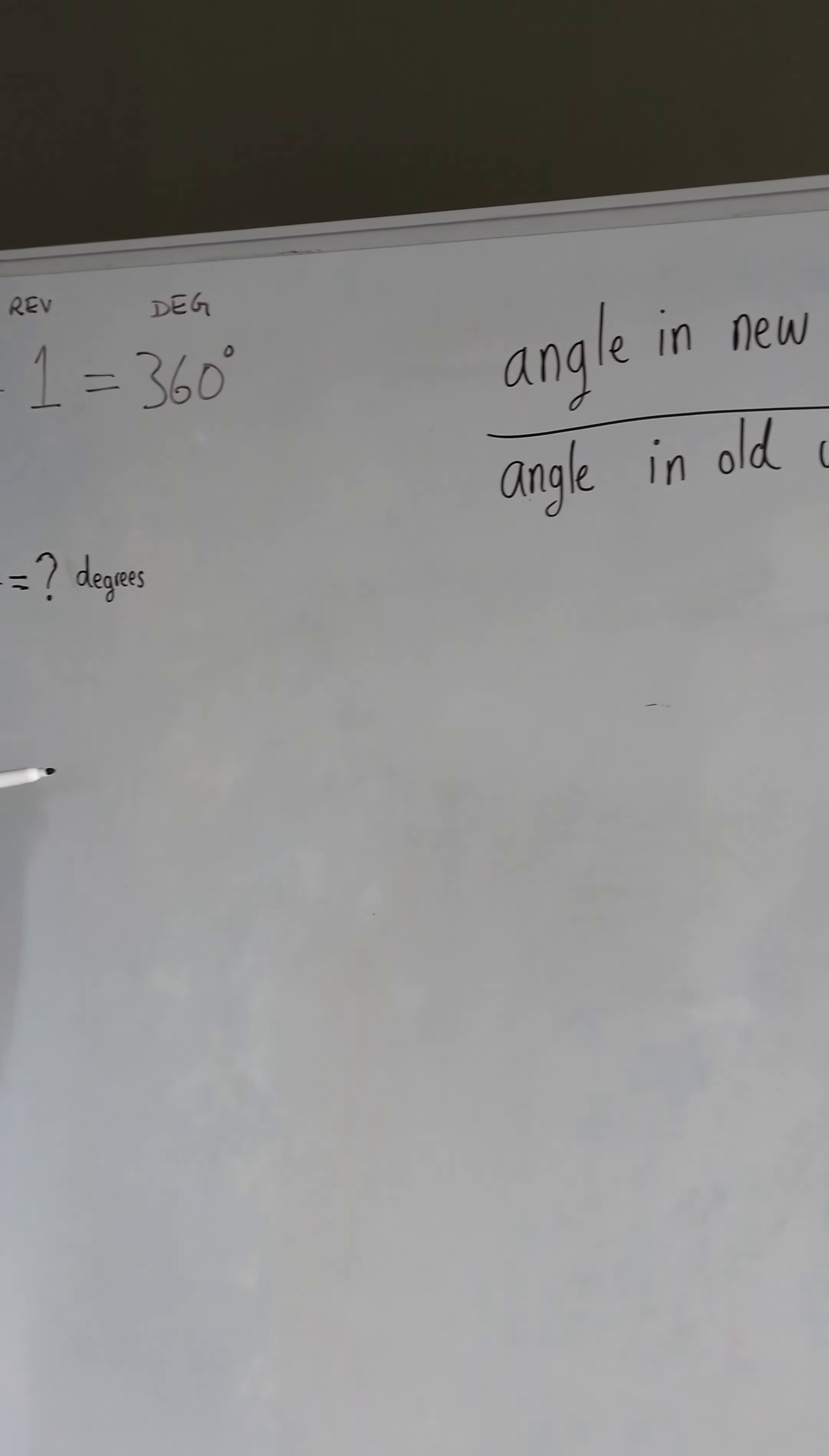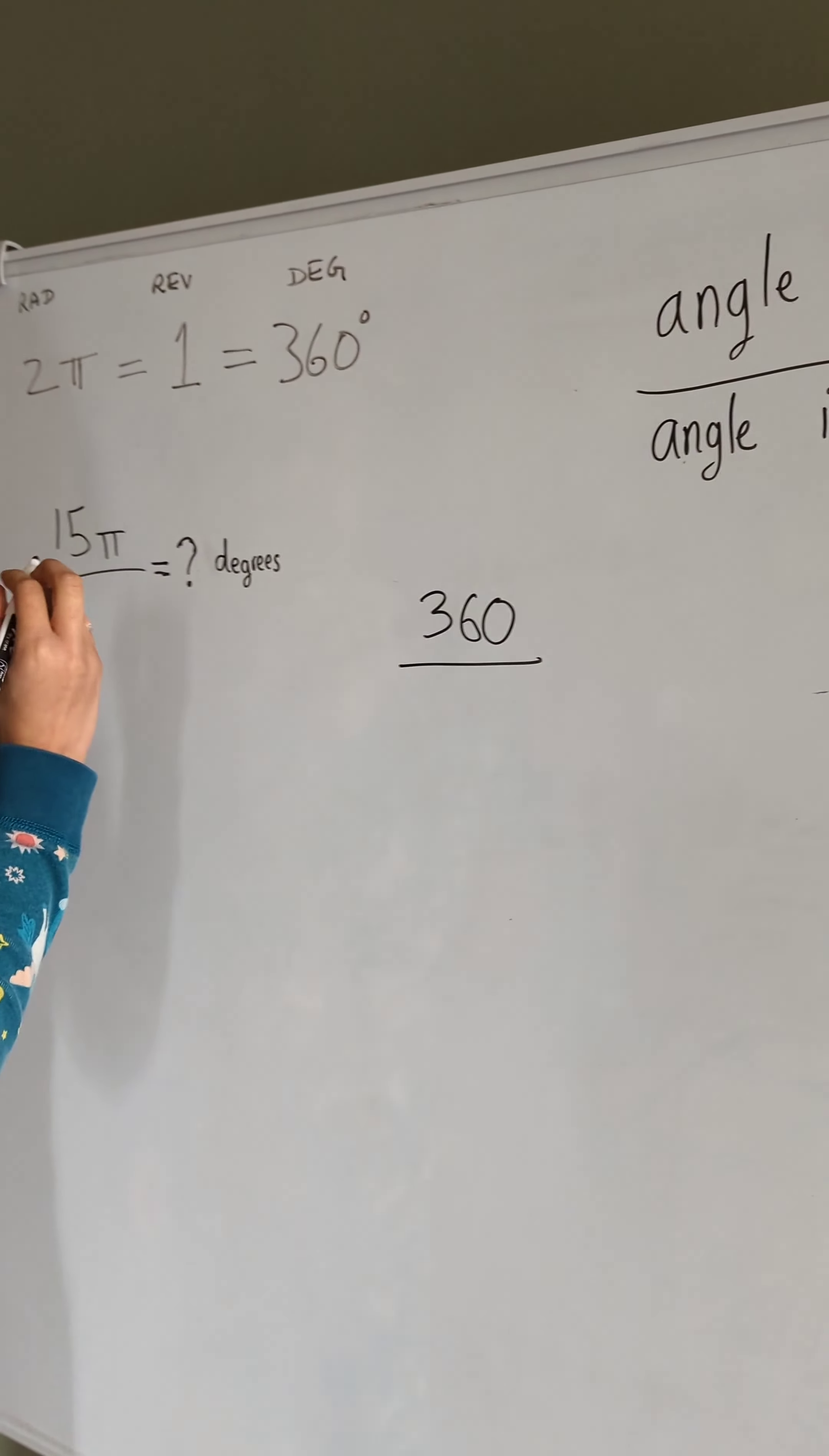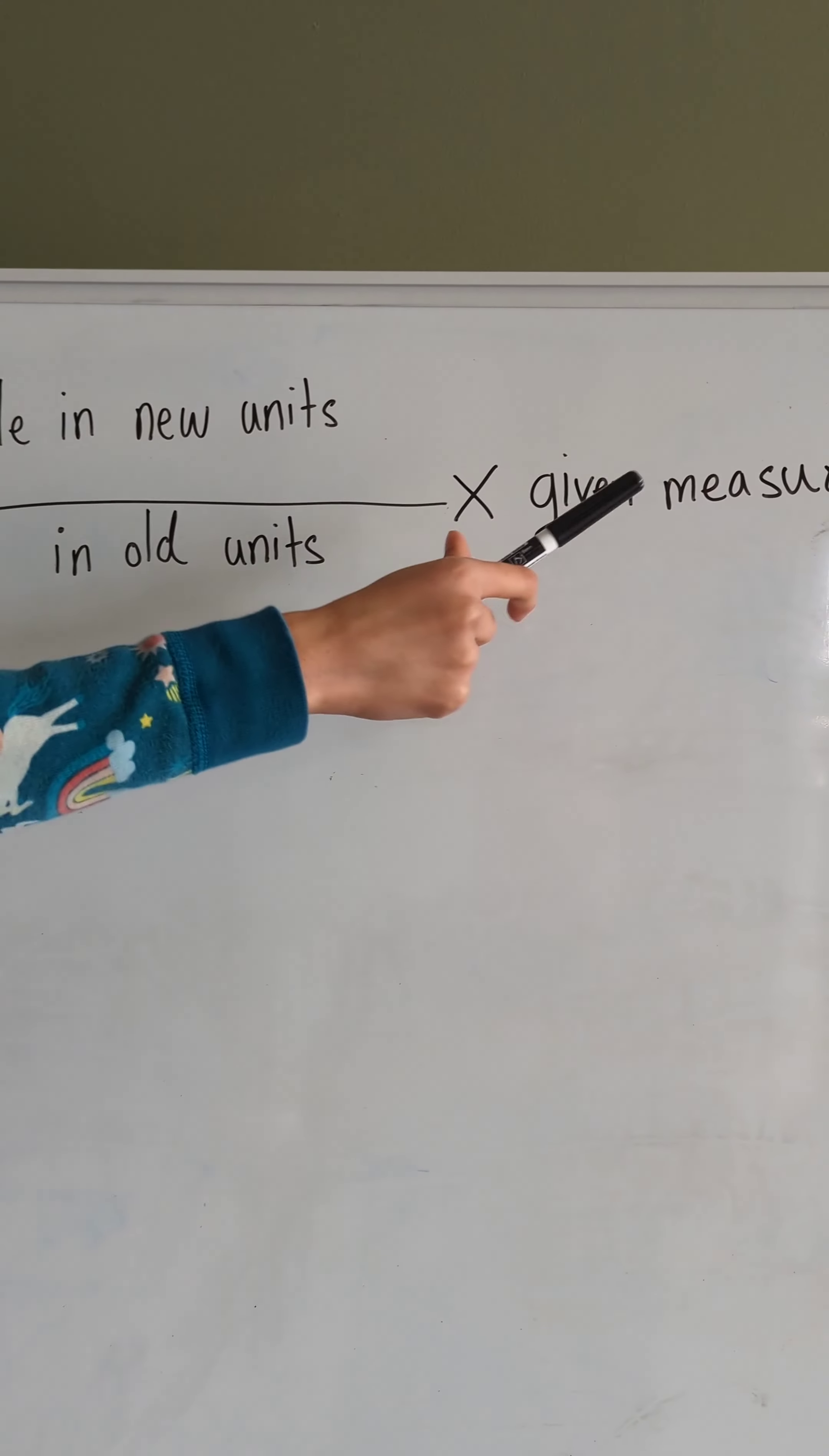The angle in new units would be degrees because that's what we need to find. And up here, degrees is equal to 360, so we'll write 360 divided by... Our old units would be radians because that's what they've already given, and radian is 2 pi.